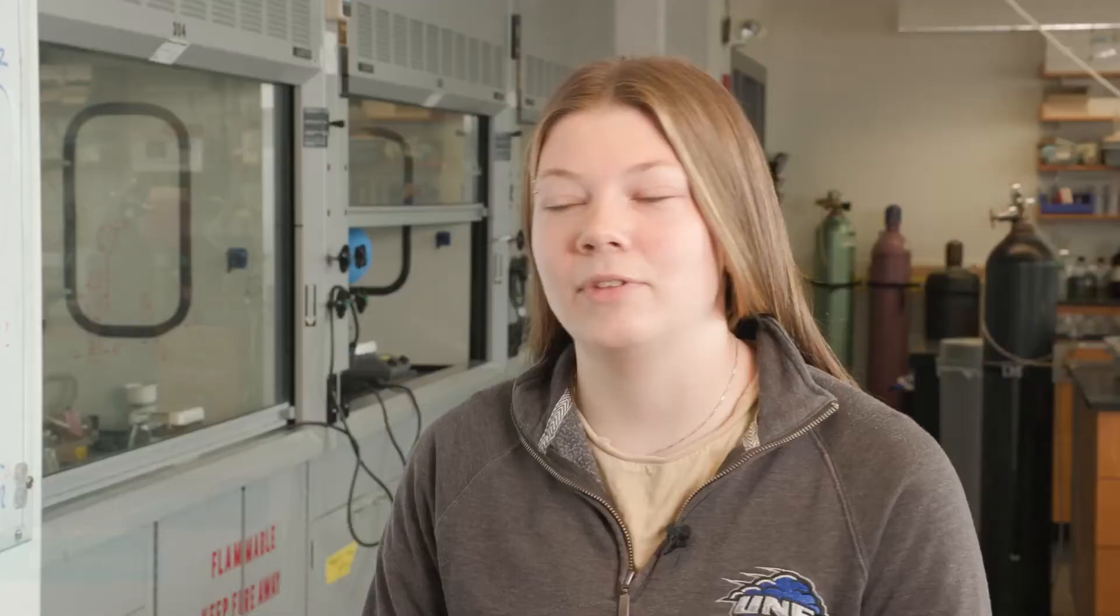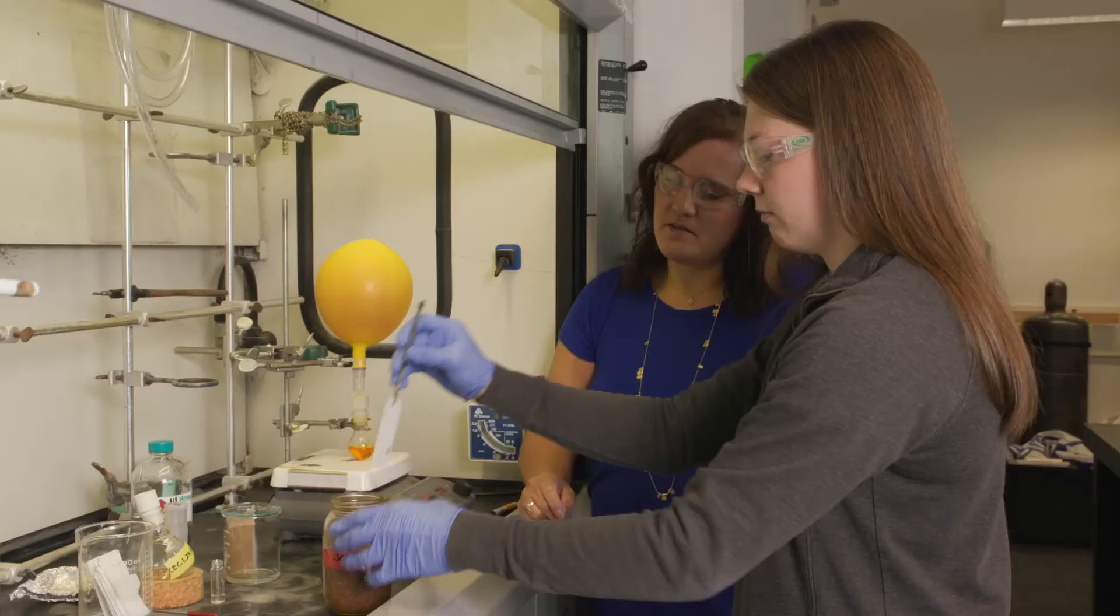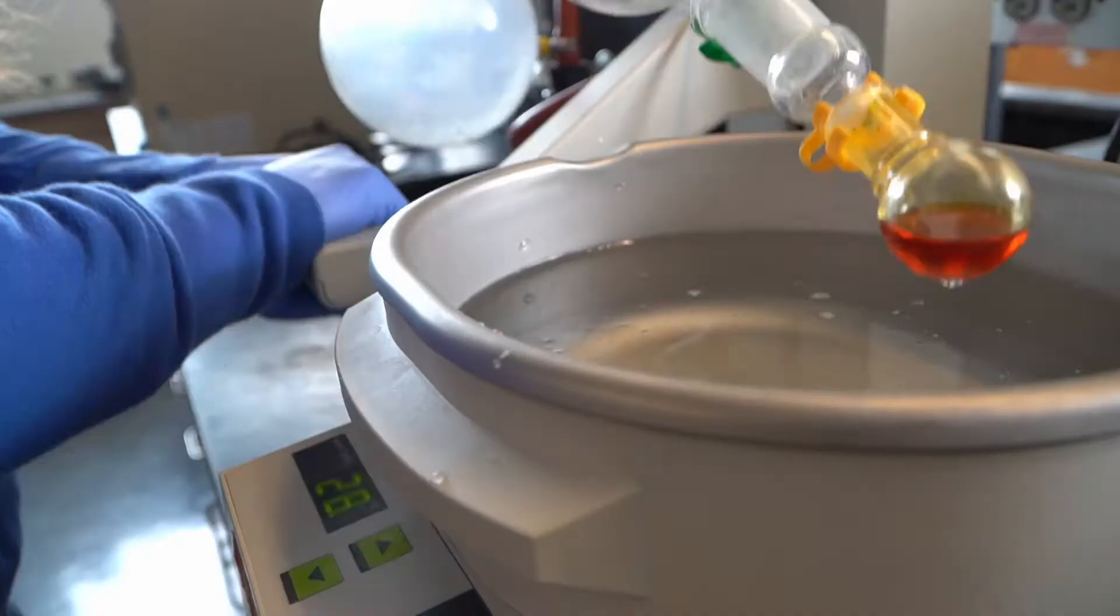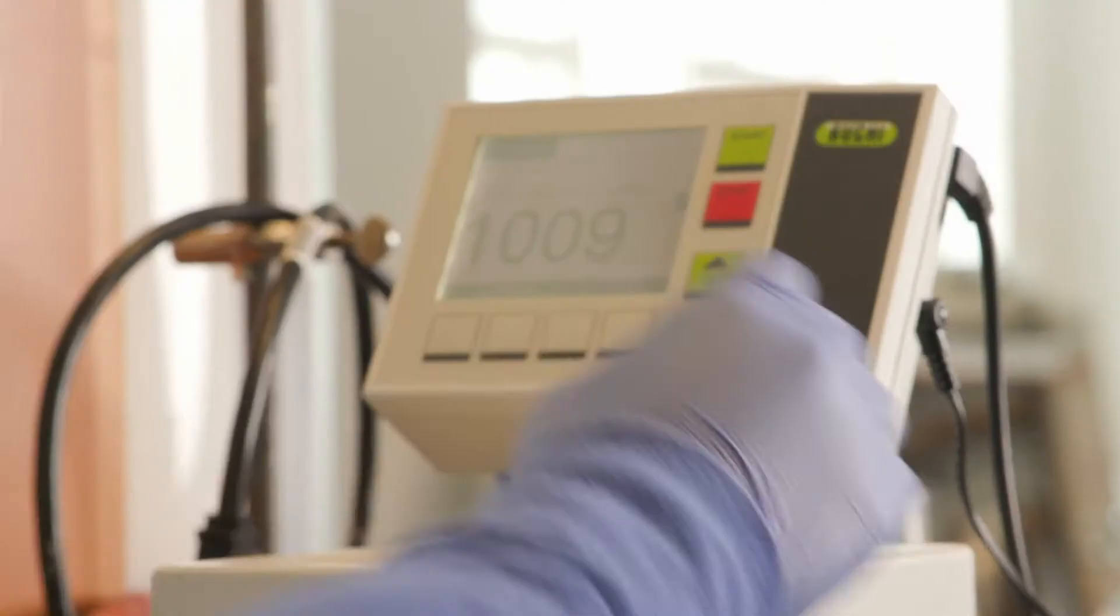The day-to-day process of what a chemist does in this lab is we'll perform an organic reaction, so that's when we put everything in the flask and mix it all together and it makes what we're trying to synthesize. Then after we make that product we have to work it up and purify it, so we'll go through different procedures that will give us a pure product.